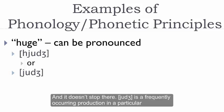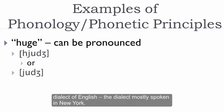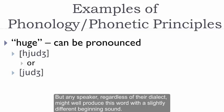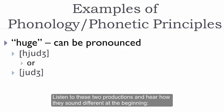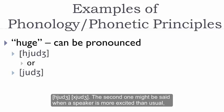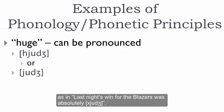And it doesn't stop there. 'Yuge' is a frequently occurring production in a particular dialect of English. But any speaker, regardless of their dialect, might well produce this word with a slightly different beginning sound. Listen to these two productions and hear how they sound different at the beginning: 'Huge.' 'Huge!' The second one might be said when a speaker is more excited than usual, as in, 'Last night's win for the Blazers was absolutely huge!'